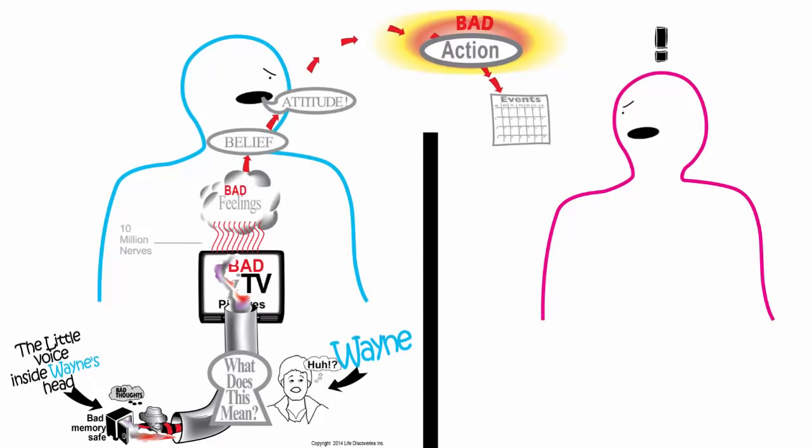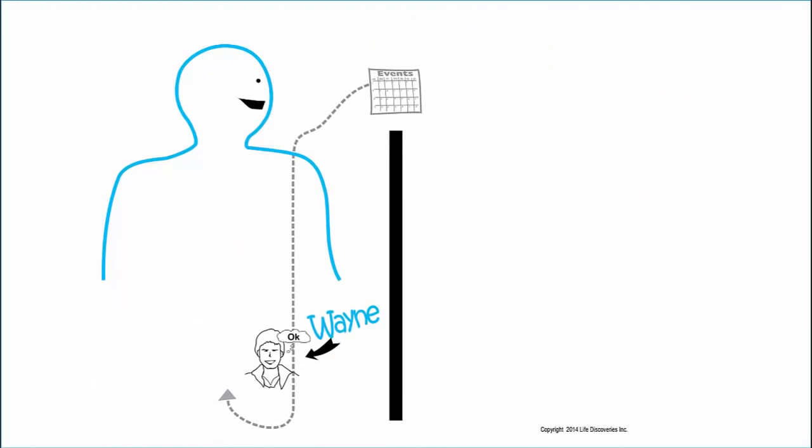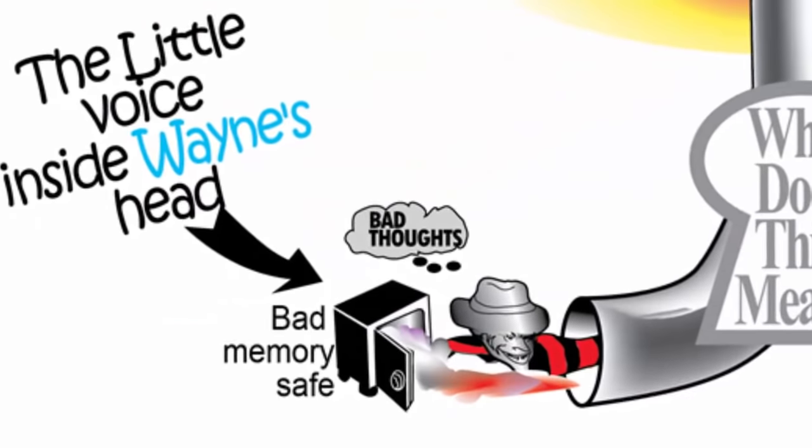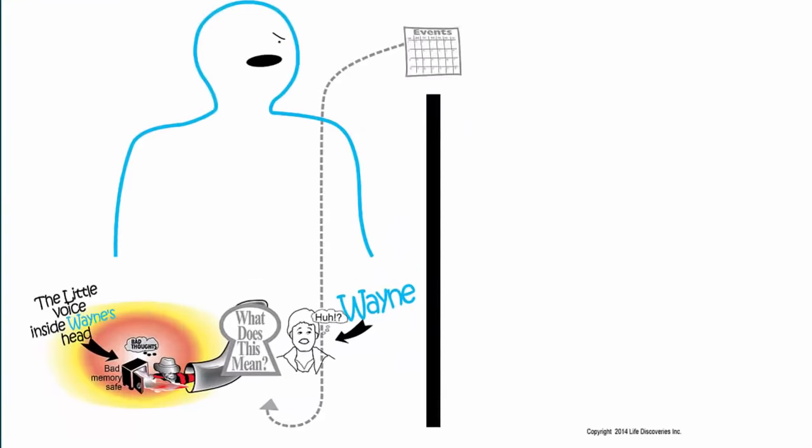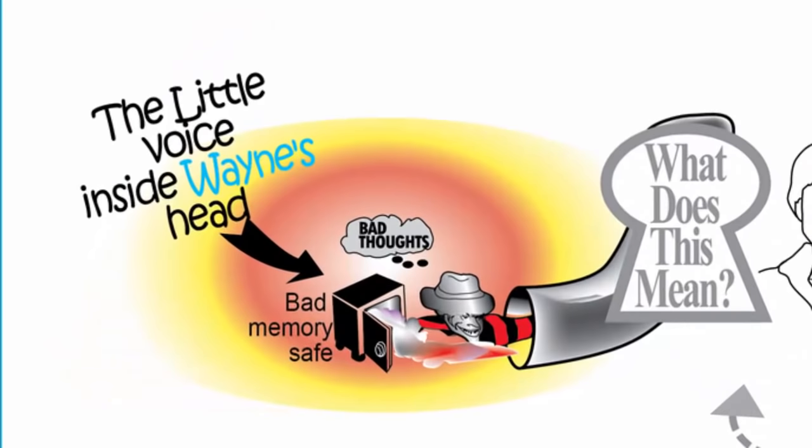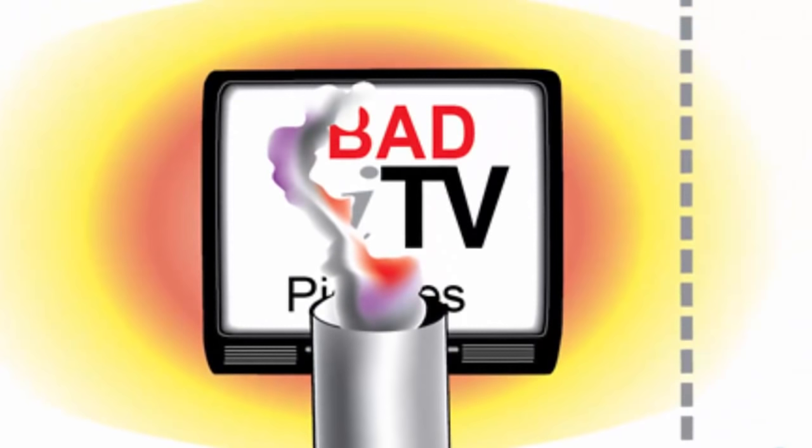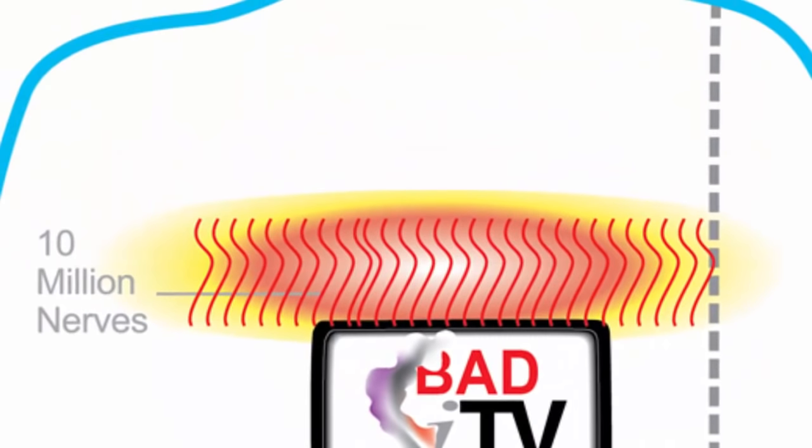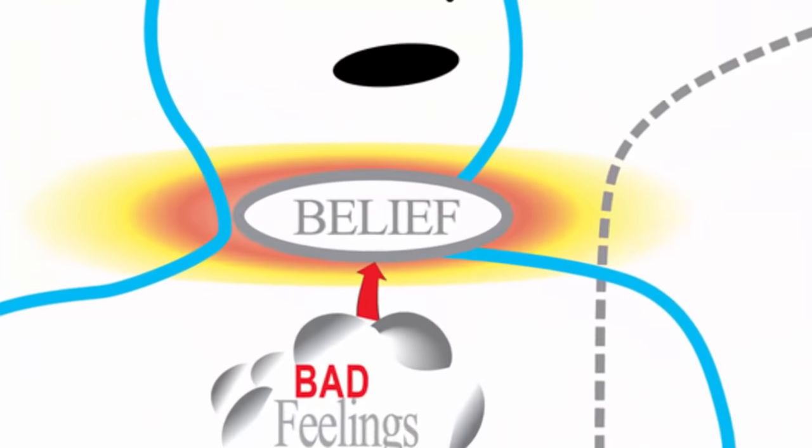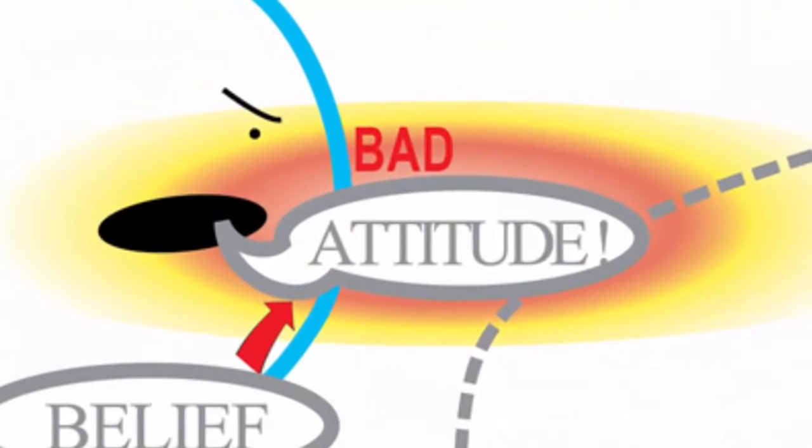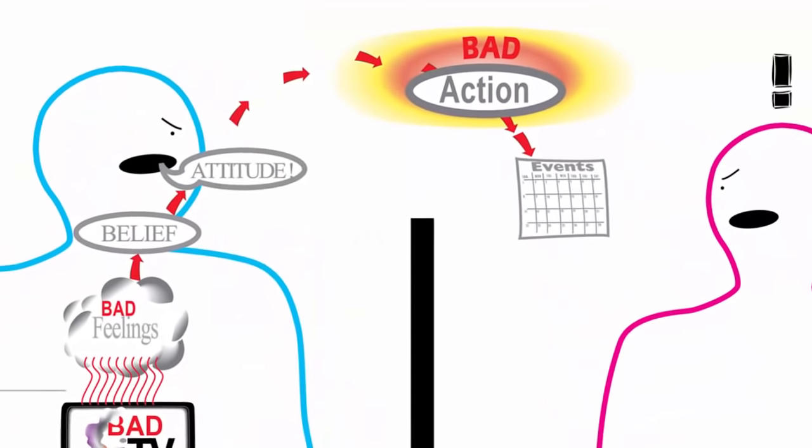Let's watch it happen step by step. An event enters Wayne. His little voice inside his head grabs it and tells Wayne's amygdala that it's a bad event. Wayne's amygdala then shuts down Wayne's brain so he can't think straight. Next, the little voice inside Wayne's head puts a bad movie into his imagination TV. His nervous system is convinced it's real and produces a bad feeling. Wayne believes his feeling is true. His attitude goes sour, which creates a bad action towards Jane.